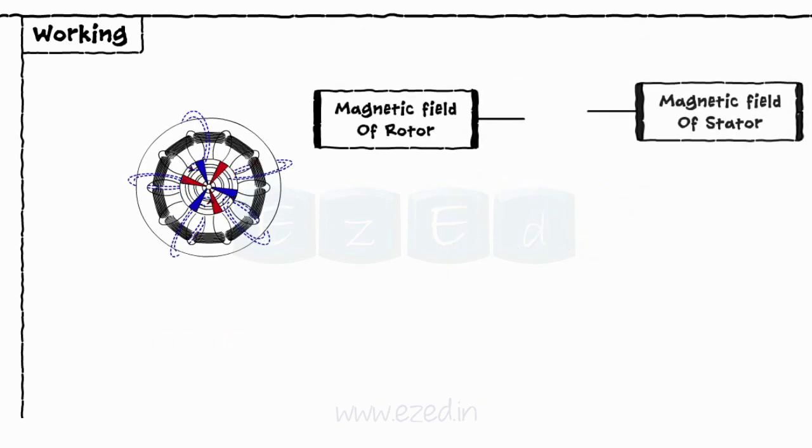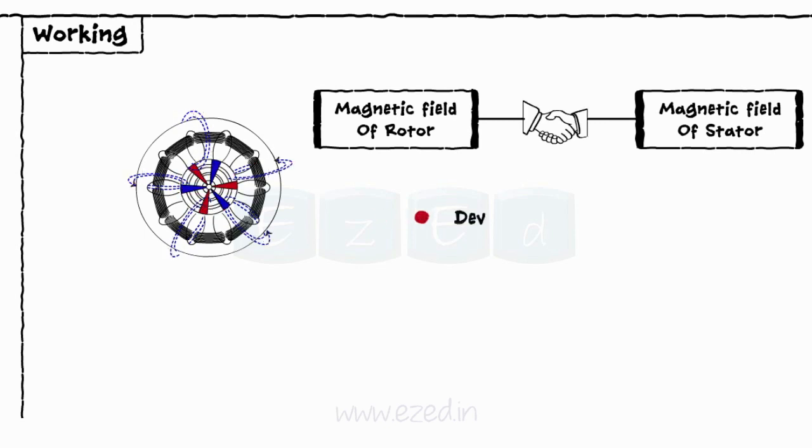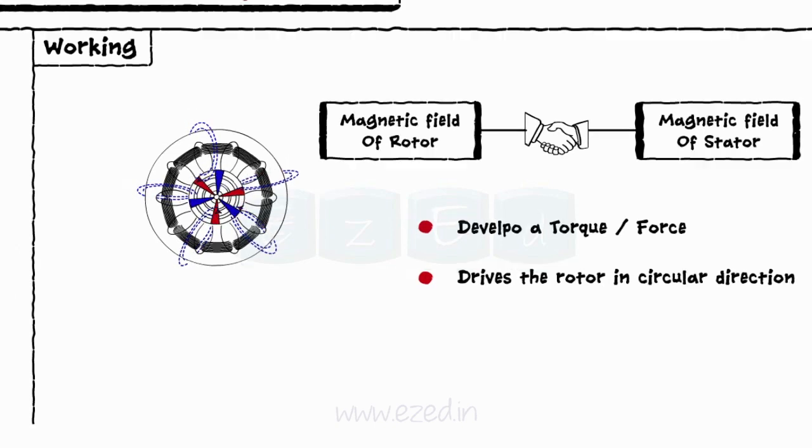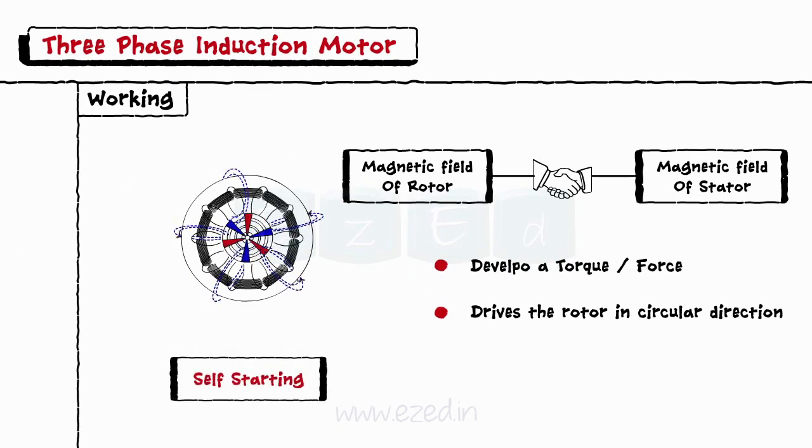This induced current develops the own magnetic field of rotor. When these two magnetic fields interact with each other, they develop the torque or force that drives the rotor in a circular motion continuously. Thus, three-phase motor is self-starting.